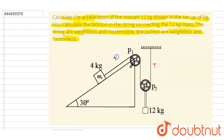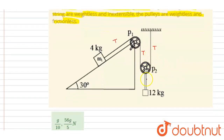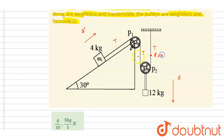The tension in the string is T. The acceleration of the 12 kg block is in the downward direction, call it a, and the acceleration of the 4 kg block is a dash. Now let's find out the relation between a and a dash. Any point on this string will have zero acceleration, and any point on this string will have the same acceleration as that of the 4 kg block, that is a dash. Let's call these points P and Q.